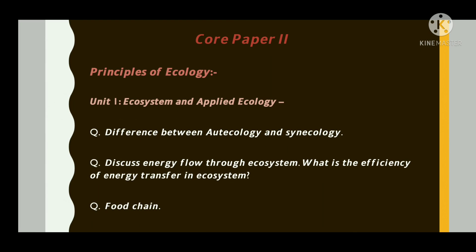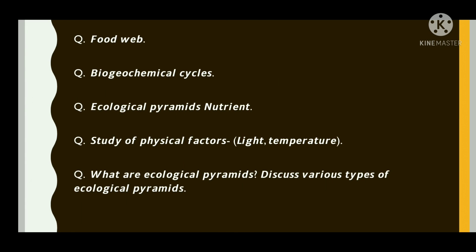And then, discuss energy flow through ecosystem. What is the efficiency of energy transfer in ecosystem? Then for food chain, they will be asked as detritors and grazing food chains, linear and Y-shaped food chains. To discuss about the food chain types. Then food web - to discuss about food web either in short or maybe it will be a short question.